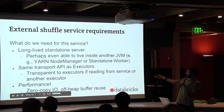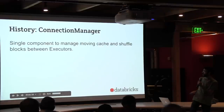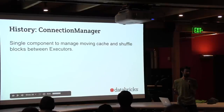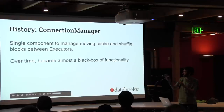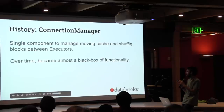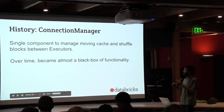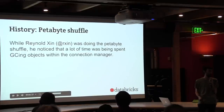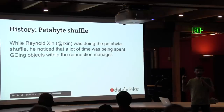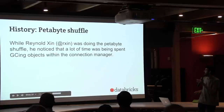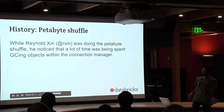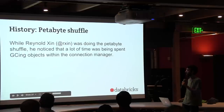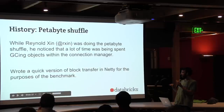To give some history: in Spark 1.1, data transfer between executors used something called a connection manager. Over time it became tangled and hard to understand, making it relatively hard to extract into a single service. Around the same time, Reynolds Shin was working on petabyte shuffle, testing Spark's limits. He noticed a lot of time was spent garbage collecting inside the connection manager because it continuously creates small objects during huge shuffles.